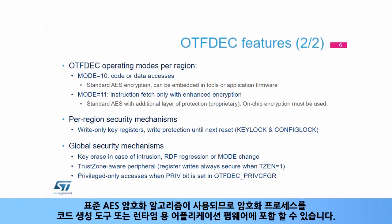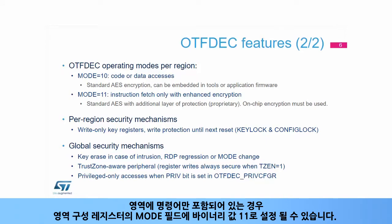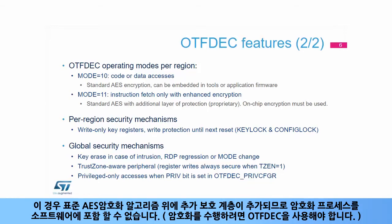Standard AES encryption algorithm is used, hence the encryption process can be embedded in code generation tools or application firmware for runtime encryption. If the region only contains instructions, the mode field of the region configuration register can be set to binary value 1-1. In this case, an additional layer of protection is added on top of the standard AES encryption algorithm, hence the encryption process cannot be embedded in software tools.